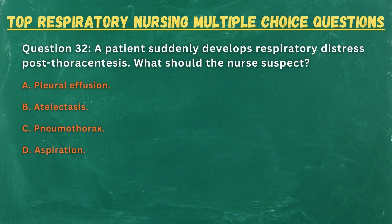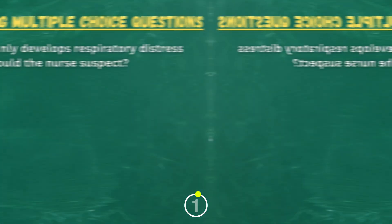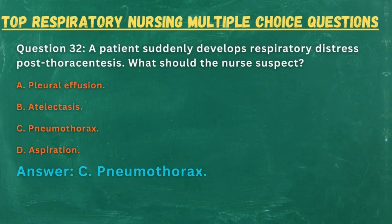Question 32. A patient suddenly develops respiratory distress post-thoracentesis. What should the nurse suspect? A. Pleural effusion. B. Atelectasis. C. Pneumothorax. D. Aspiration. Answer: C. Pneumothorax.